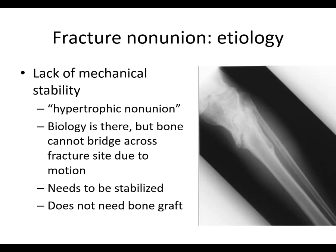Going back to the hypertrophic nonunion — lack of mechanical stability. Here you can see tons of bone being formed out here, lots of callus, but there's just this fracture line that goes all the way through and it's still there. The biology is there, but bone can't bridge across the fracture site due to the motion. It needs stabilization — doesn't need bone graft. You just go in and fix this and it's going to heal.